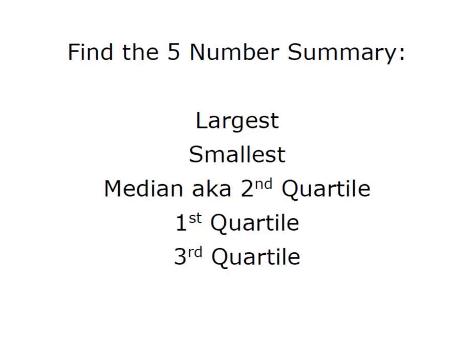A box plot is based on what we refer to as a five number summary and it's made up of the largest and smallest data points, the median which is also known as the second quartile, and then the first quartile Q1 and the third quartile Q3.